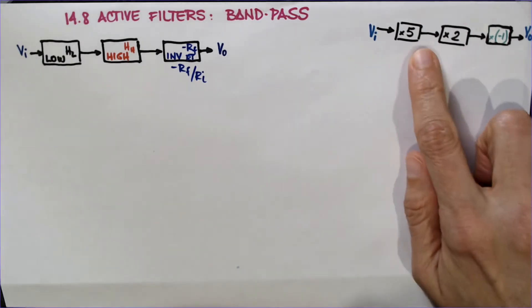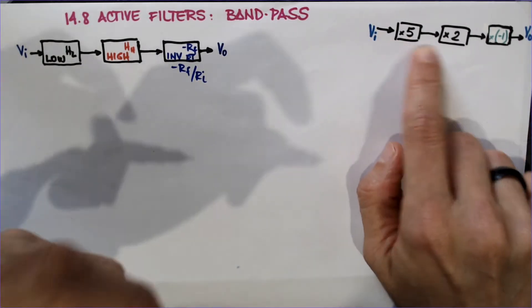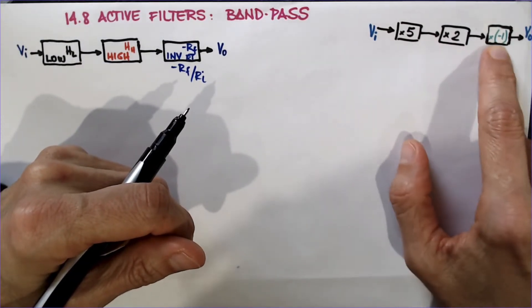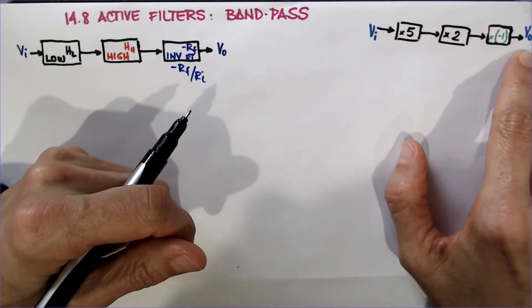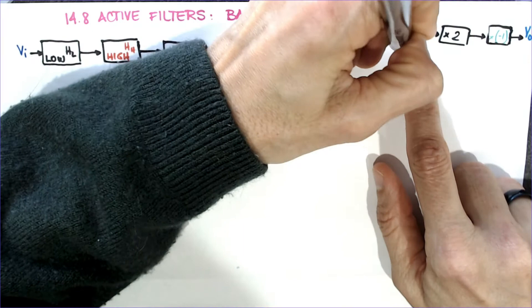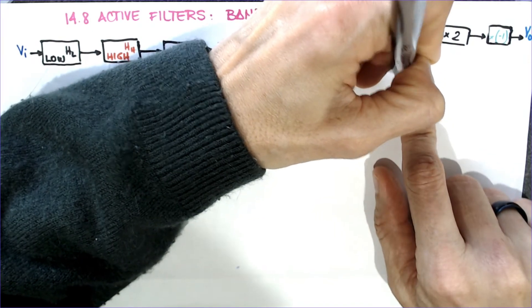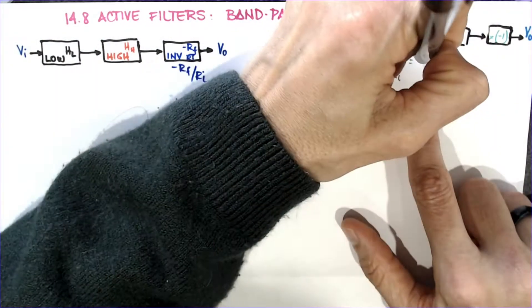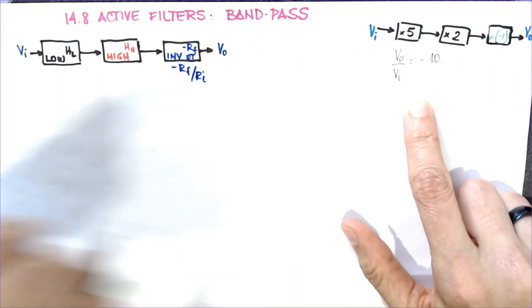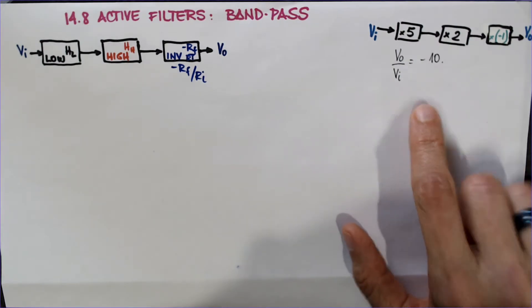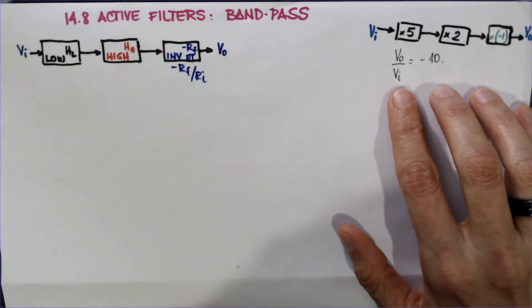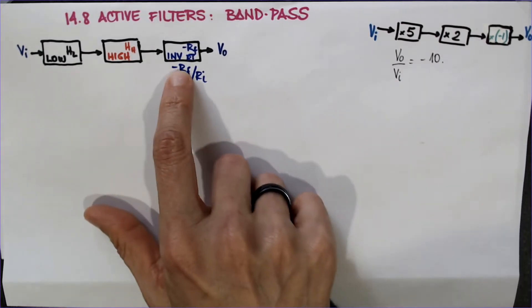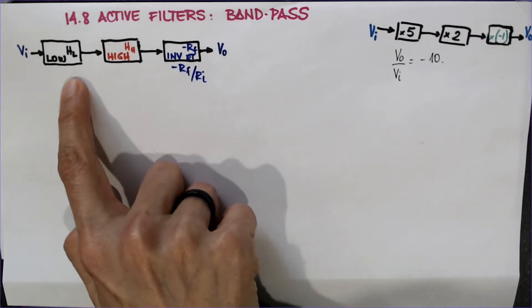So, assume that something that multiplies this signal by 5, then goes into times 2, then goes into times minus 1. So, at the end, the output will be V out over V in will be equals to 10 times minus 1, which is minus 10. So, this is the final transfer function, so it's a gain of 10. Of course, I'm not talking about filters just yet, just to give you an idea of how I'm looking at these transfer functions and the connections between one filter and the next.